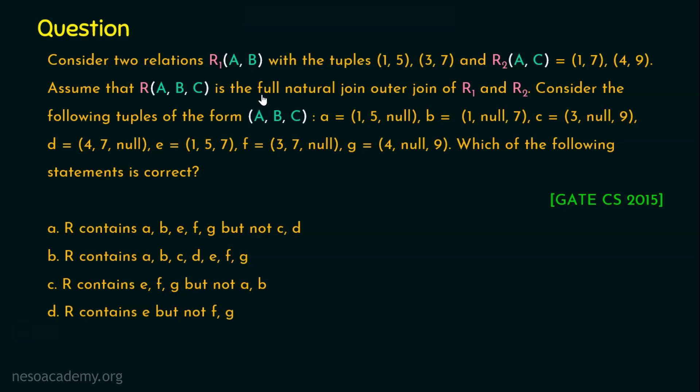The output of this full natural outer join is the relation R that contains the tuples A, B, C, D, E, F, and G. And what we are required to find is which of the following statements is correct. In order to answer this, let's actually formulate the table.